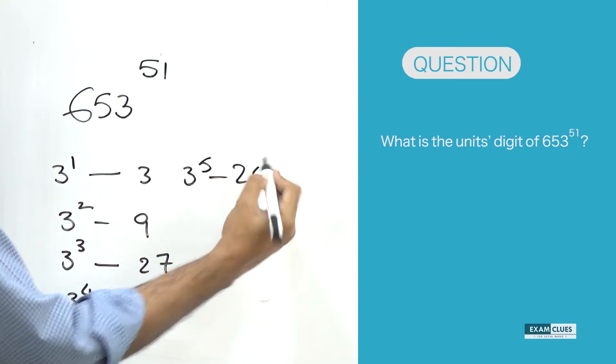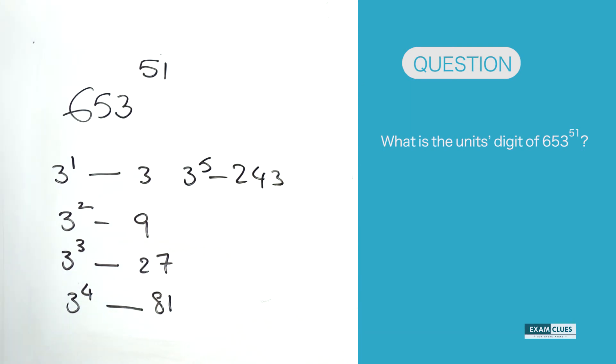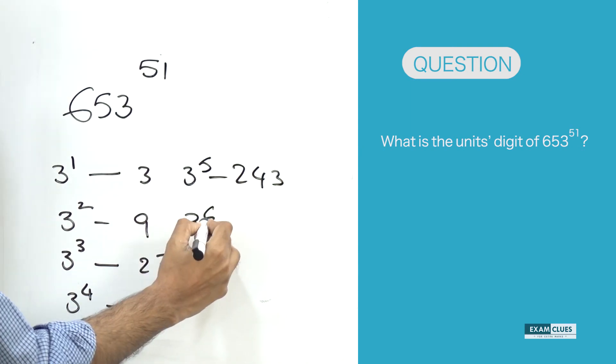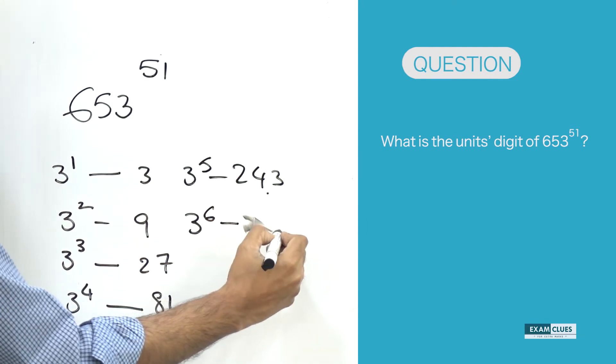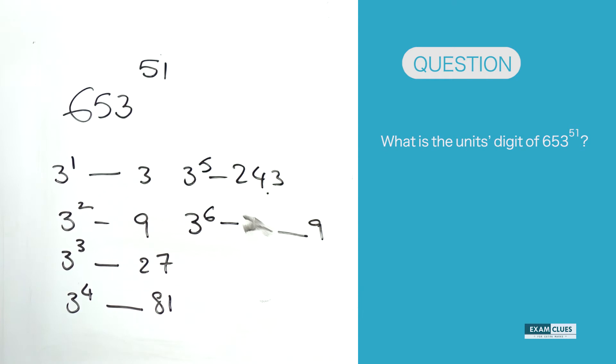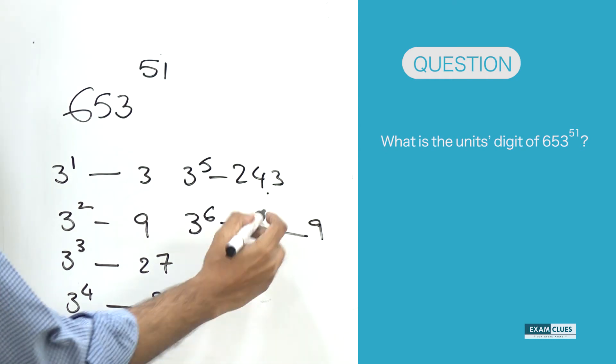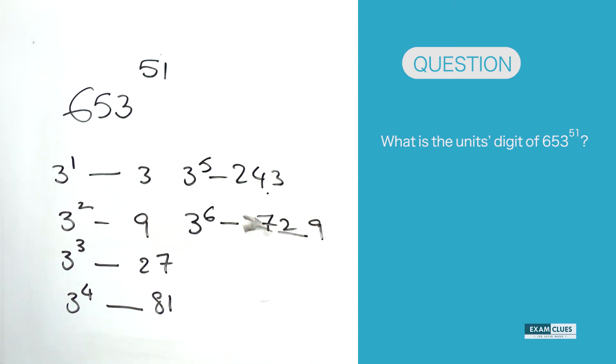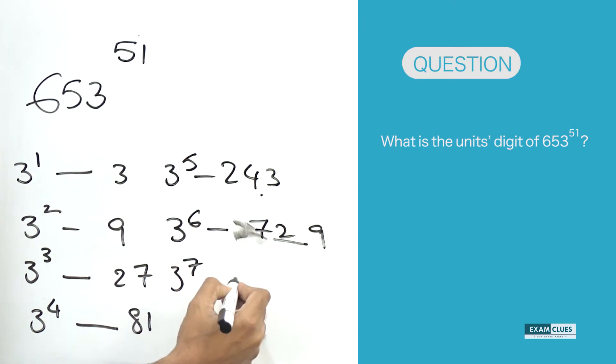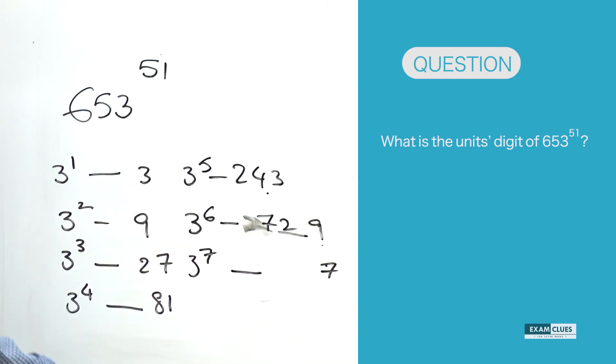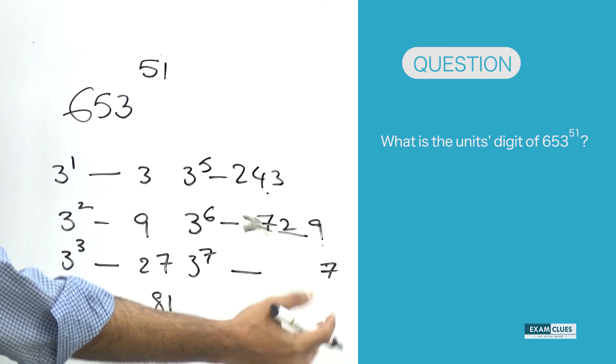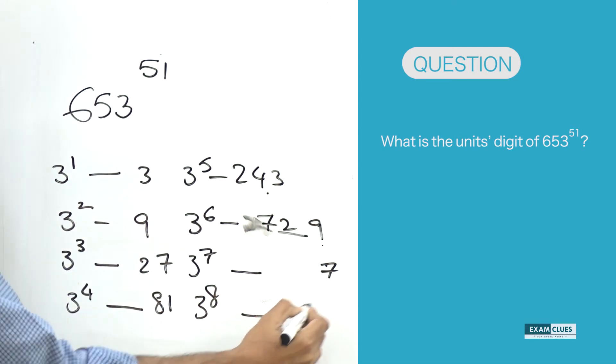Let's say 3^6, I need to multiply this number with 3 again which will give us something ending with 9, which is actually 729. If you take 3^7, this will end with 7 because 3 times 9, the last digit is 7. 3^8, the last digit is going to be again 1.